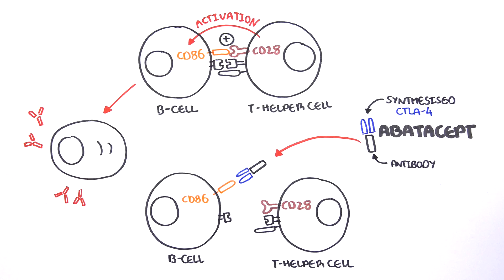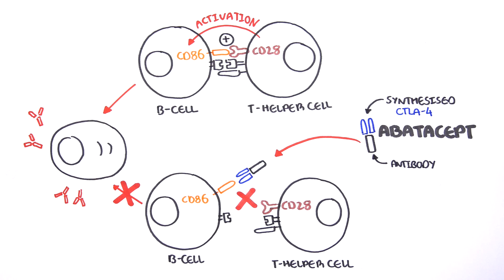This blocks CD28 from binding to CD86, and thus blocks the second signal required for B cell activation, stopping activation of the immune system.